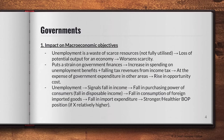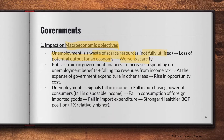Looking at the government, there's a bit more to cover. Firstly, unemployment is a waste of scarce resources because workers with skills are not being employed. This leads to a wastage of resources and a loss of potential output for the economy, worsening scarcity. As we learned from our first video on economics, scarcity is the central problem of economics, so not utilizing available resources worsens it.